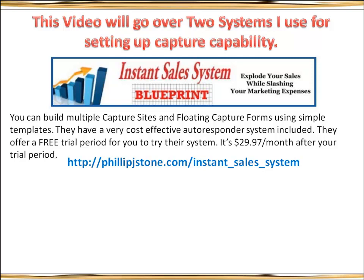It's $29.97 per month after the trial if you keep the system — tremendously affordable. The price doesn't go up, you can have as many sites as you want, with floating forms as well as capture sites, and the autoresponders don't increase in cost as you develop a large list.